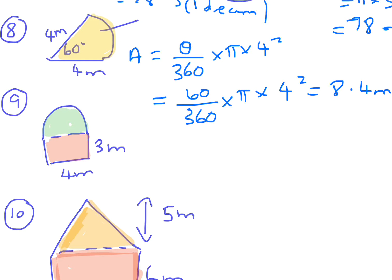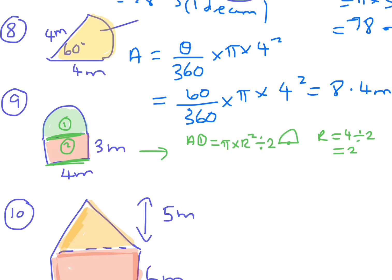For this next shape we have two areas. Area 1 is a semicircle — half a circle. The diameter is 4 so the radius equals 4 divided by 2, which equals 2. The area is pi times radius squared divided by 2, so it's pi times 2 squared divided by 2, which equals 6.3 meters squared to one decimal place.